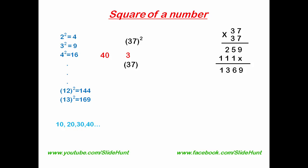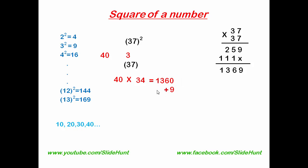Now add 3 to 37, which gives 40. Next, subtract 3 from 37, which gives 34. Next, multiply 34 with 40, which equals 1360. Next, square the difference number and add it: the difference is 3, and 3 squared is 9, so 1360 plus 9 is 1369. The square of 37 is 1369.